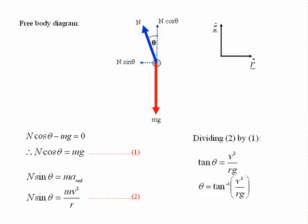Notice it depends on the speed and the radius of the road. For a given radius, no one angle is correct for all speeds. Therefore, the road is generally banked at an angle corresponding to the expected average speed.